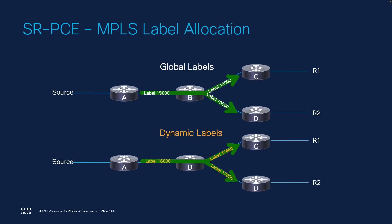In an MPLS architecture, labels are platform-specific. Each router has its own database of labels that it can advertise, but ultimately the allocation of labels happens on the router itself. We need to make sure that the label allocation is correct. The controller should allocate labels that are not used by routers for a different use. Proper label management needs to happen to avoid collisions. We can choose between global and dynamic labels. With global labels, we have the same label on each branch of the tree, while with dynamic labels each one can be different.